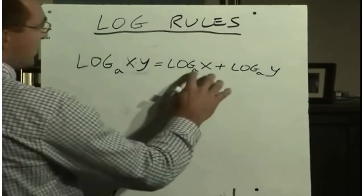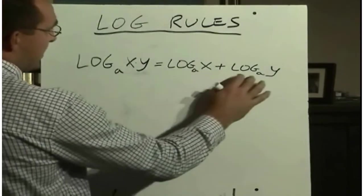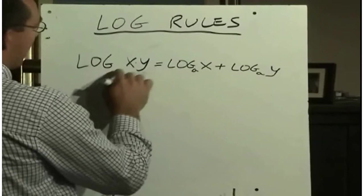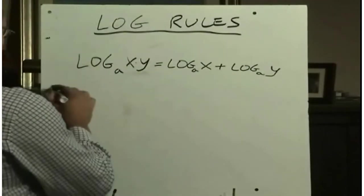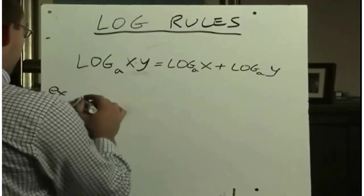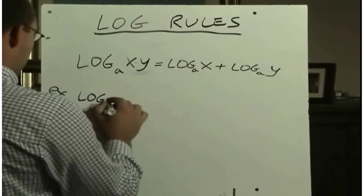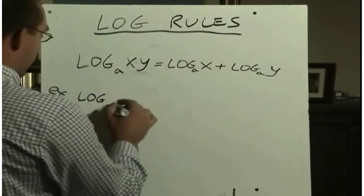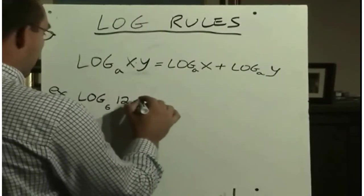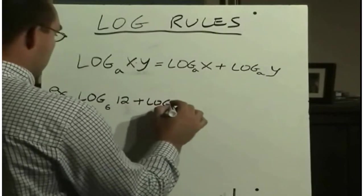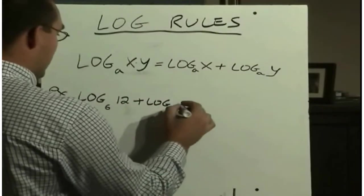So the sum of the logarithms, as long as their bases are the same, is equal to the logarithm of their products. So here's an example. Say we were asked to simplify this.